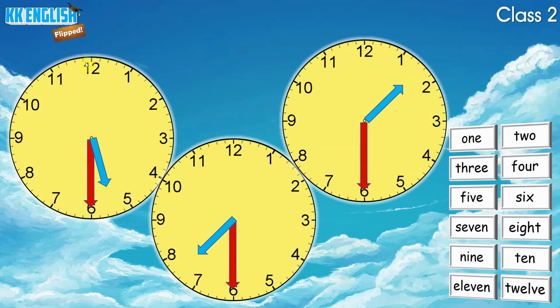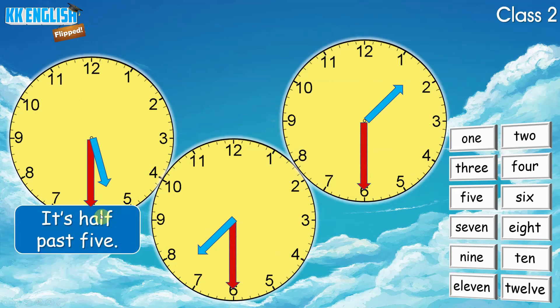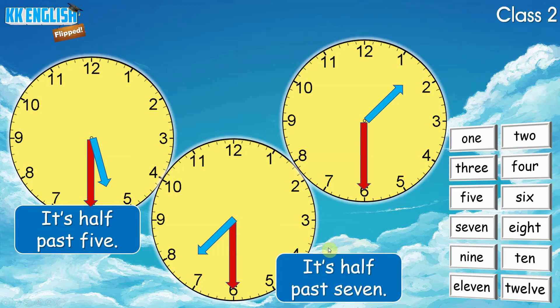Look at this clock. This one. Can you tell me what's the time? It's half past five. It's half past five.五点三十分, 五点半. Look at this clock. What's the time? It's half past seven. It's half past seven.七点三十分,七点半. What's the time? It's half past one. Half past one.一点三十分.